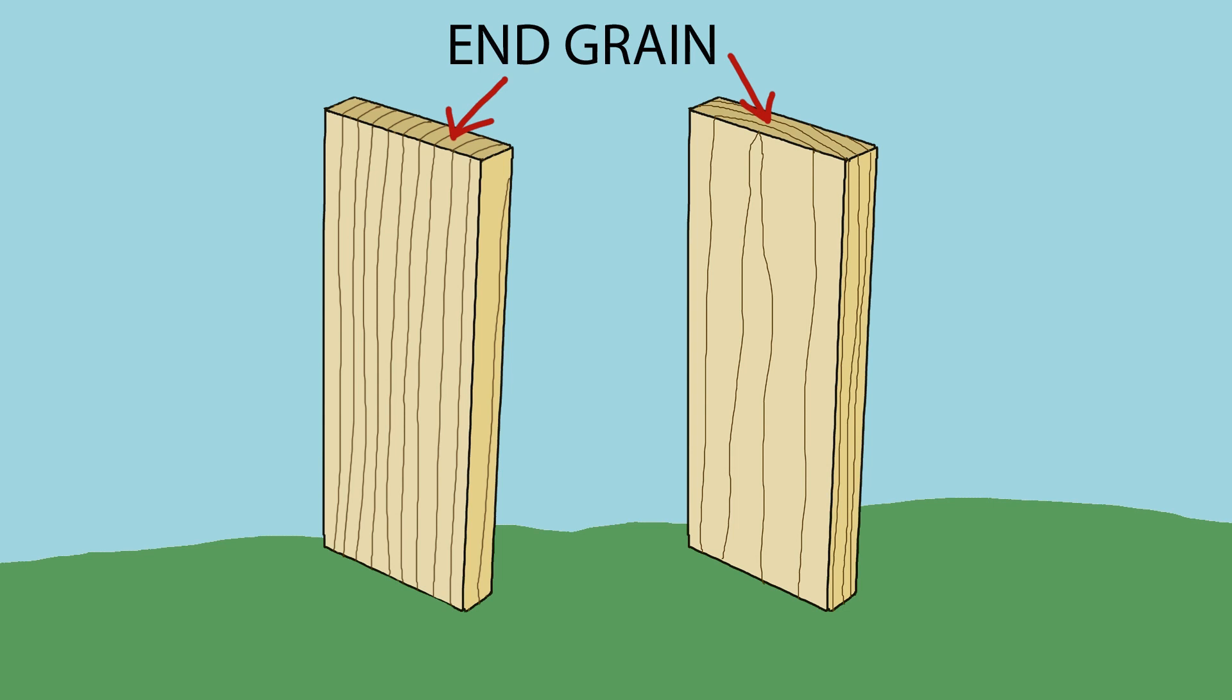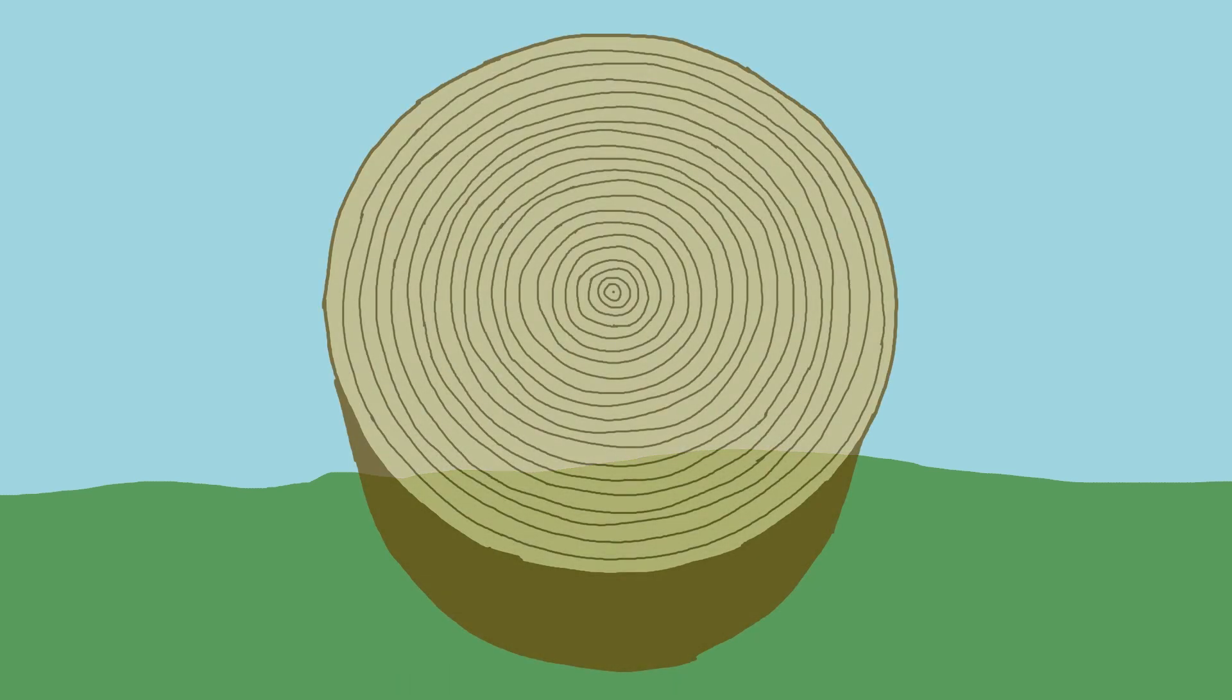End grain is the most porous part of a board, like the ends of the straws. If you see a tree's growth rings, you are looking at end grain.